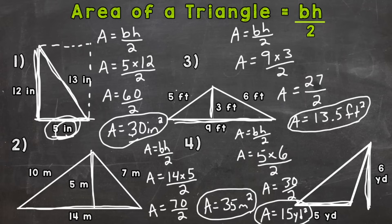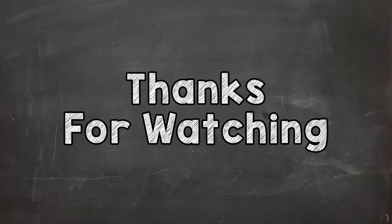So there you have it — that's how you calculate the area of a triangle: base times height divided by 2. Hopefully that helped out. Thanks so much for watching.